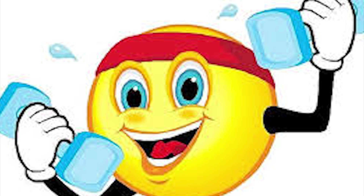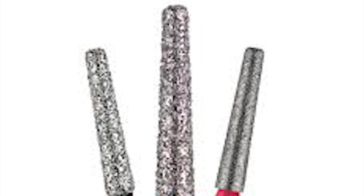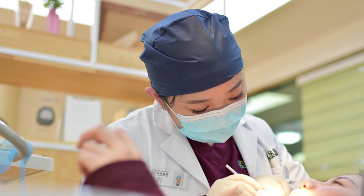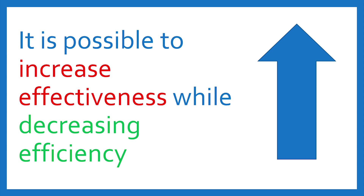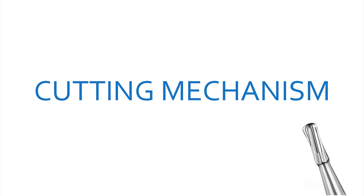Consider a scenario where a burr is less efficient — that means it is not able to cut tooth structure well. You can increase its effectiveness by applying more pressure on the tooth structure, but your efficiency will reduce because you are using more energy to cut. Now let's understand the cutting mechanism — how dental burrs or diamond abrasives are able to cut tooth structure.